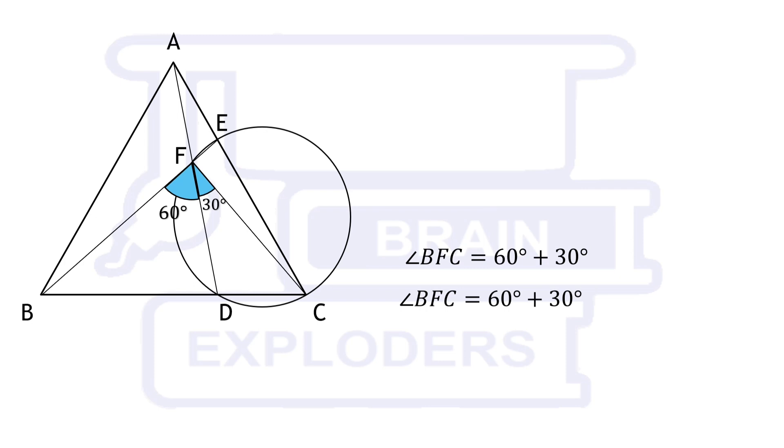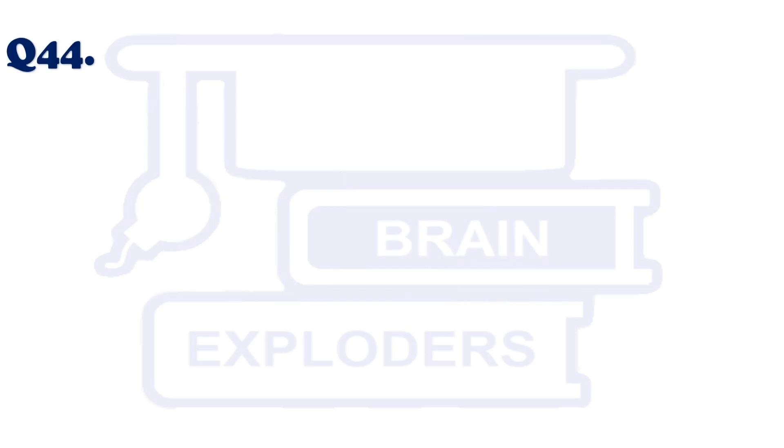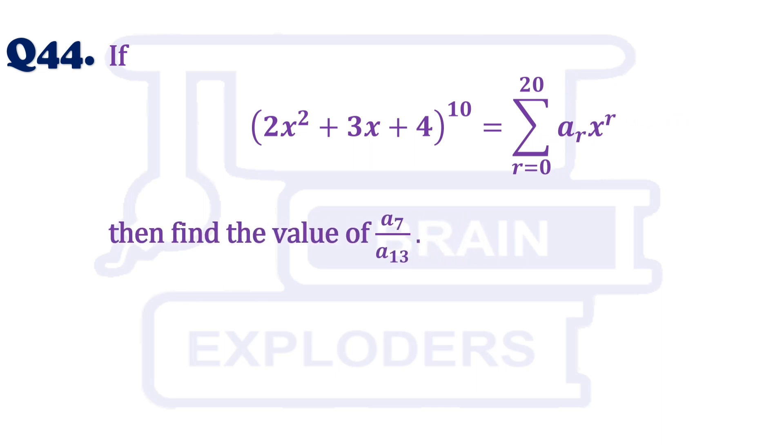Let's move to our another question. If 2x squared plus 3x plus 4 raised to the power 10 is equal to summation r from 0 to 20 ar x to the power r then find the value of a7 over a13.